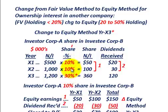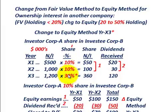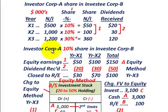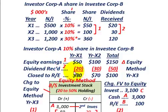For the first two years, we used the fair value method to account for Corporation A's ownership interest in Corporation B. But in year X3, we have to change to the equity method. The first thing we have to do is determine the difference between our equity earnings and our dividends received, which is going to relate to our retained earnings.